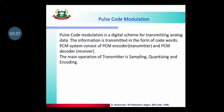Pulse Code Modulation is a digital scheme for transmitting analog data. The information is transmitted in the form of code words. A PCM system consists of a PCM Encoder, which is the transmitter, and a PCM Decoder, which is the receiver. The main operations of the transmitter are sampling, quantizing, and encoding.